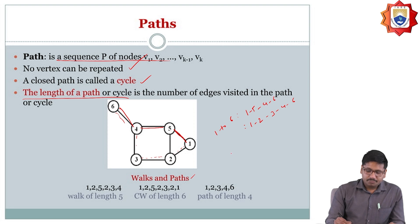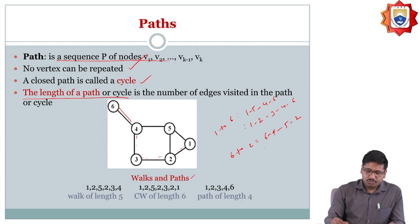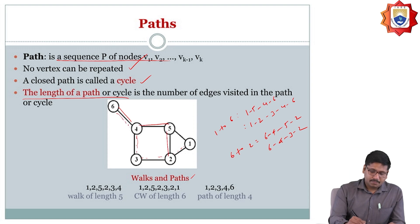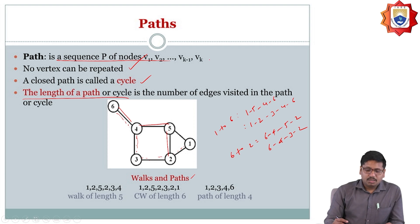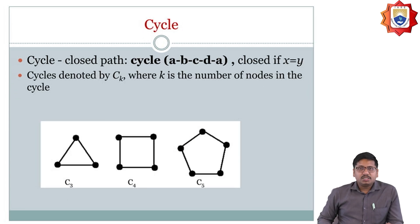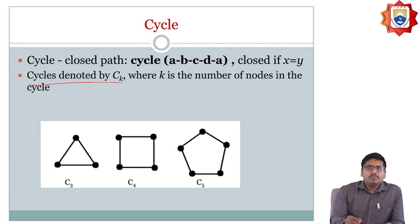Path is nothing but a sequence of nodes and no vertex can be repeated. A closed path walk is called a cycle. Cycle is nothing but a closed path — if x equals y (start equals end). Cycles are denoted by C(k) where k should be the number of nodes in the cycle.